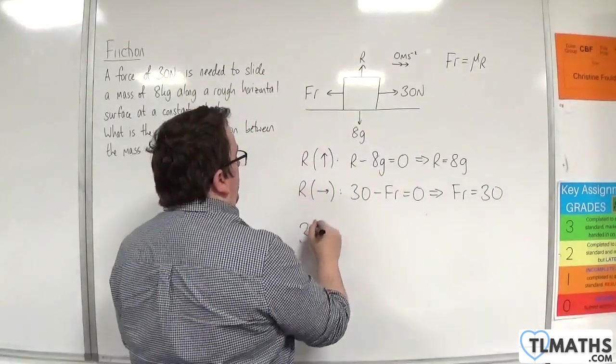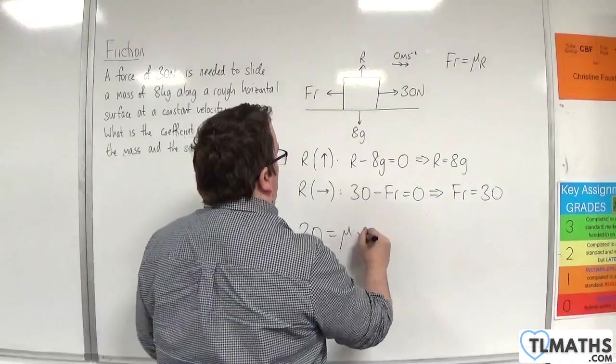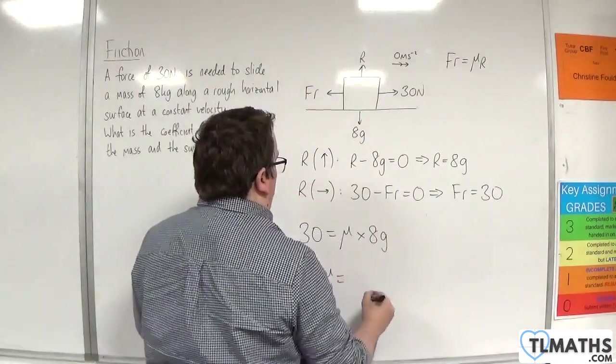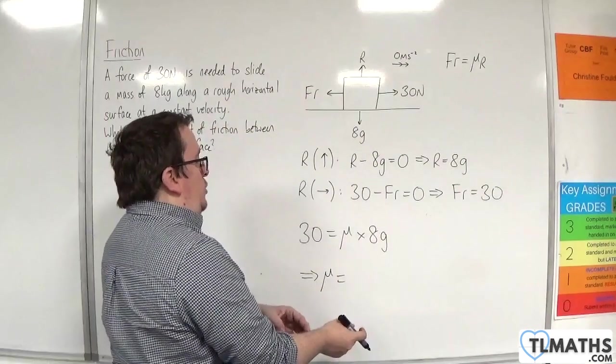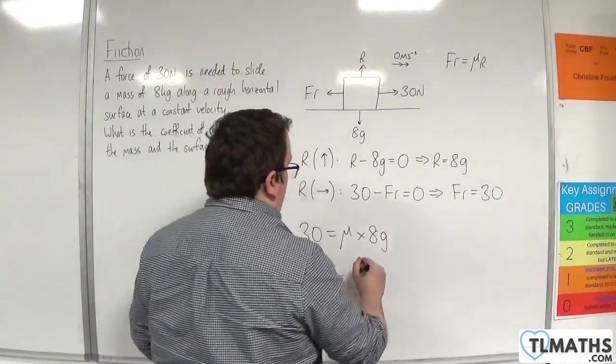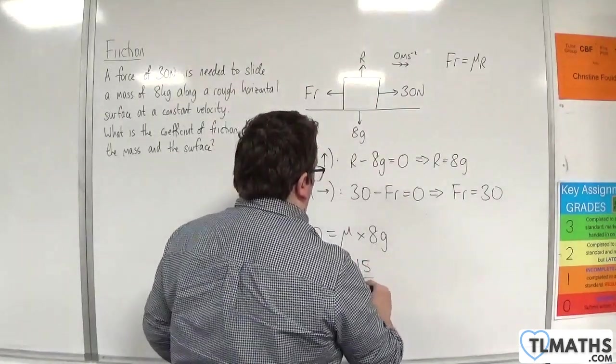So we know then that 30 must be equal to mu times R. So mu must be 30 over 8g, and so that will be 15 over 4g.